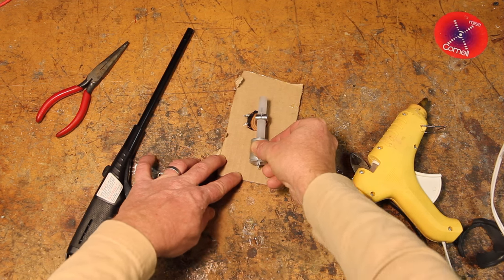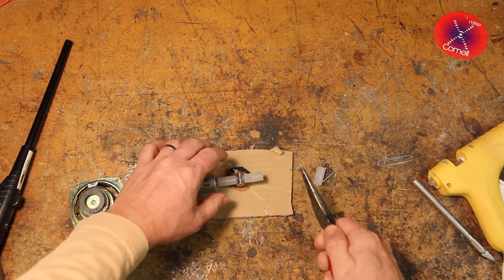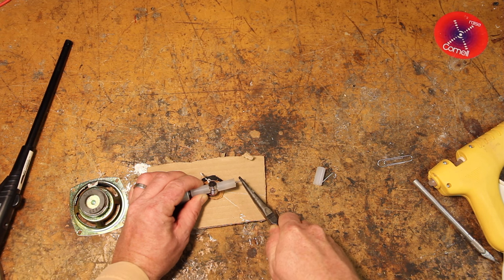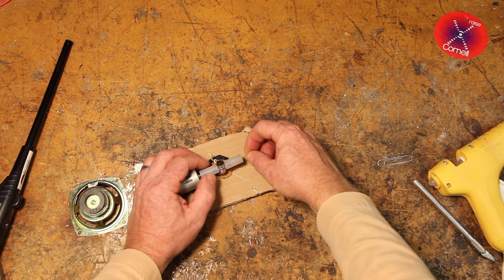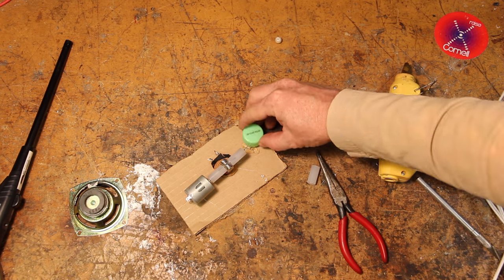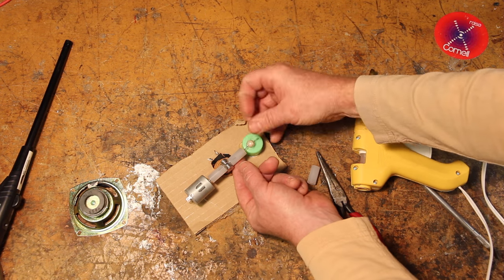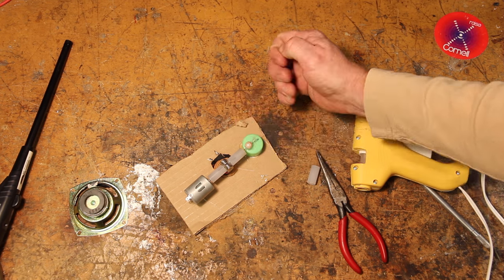Another paperclip, heated and pushed into the center of the other glue stick, will help make sure that this apparatus stays centered above the coil as it spins. That paperclip is going to need to sit inside of a slip bearing. You're going to have to find a spacer that's the right height, and I'm using a bead for that.